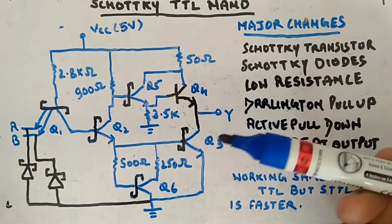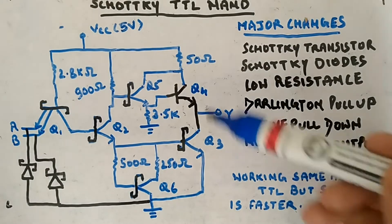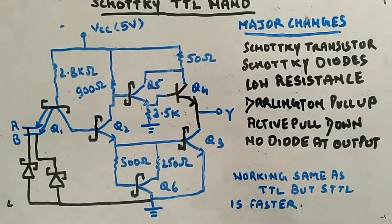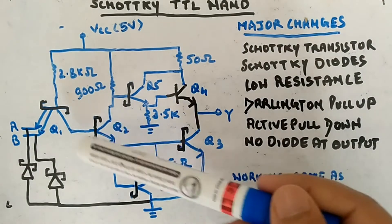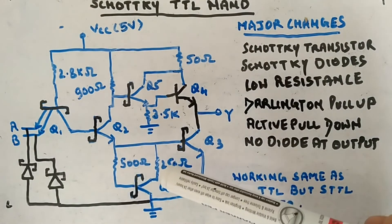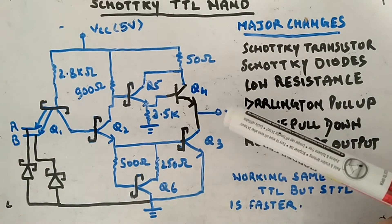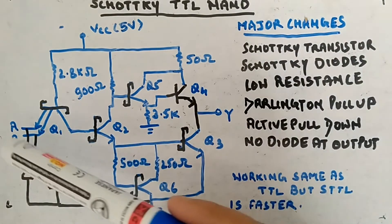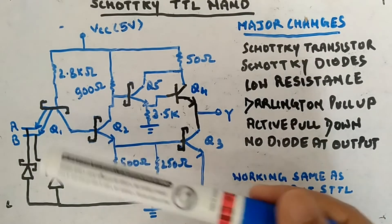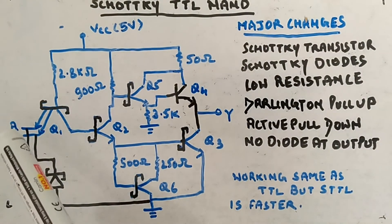You might have guessed how this is faster now. Working is similar to TTL but Schottky TTL is much faster. When any one of the inputs is low, Q1 will be in the active region and will try to draw charges out from Q2. Q2 will not be active — it will be in cutoff. If Q2 is in cutoff, these two transistors will also be in cutoff because they won't get any current, so Y will be connected to the open upper circuit providing low resistance, and you will have a high output.